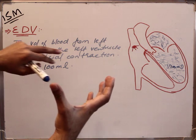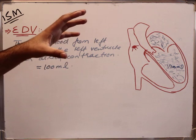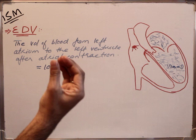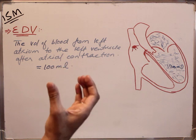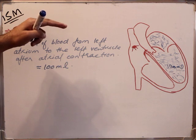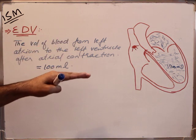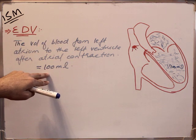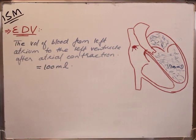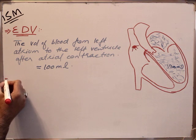After the dilation of the ventricle, blood from the atrium reaches the ventricle. When the ventricle ends its dilation, a certain amount of blood reaches and fills the ventricle. This amount of blood is called end diastolic volume.